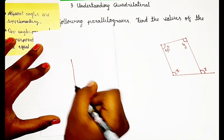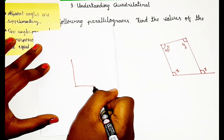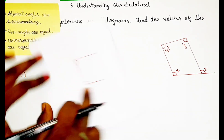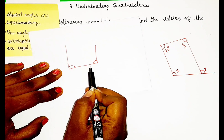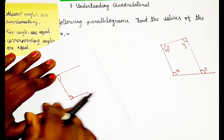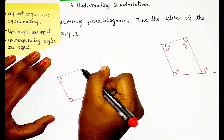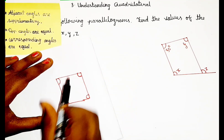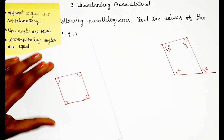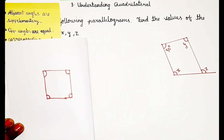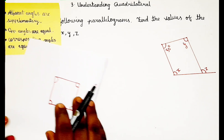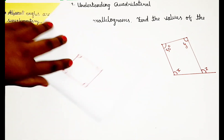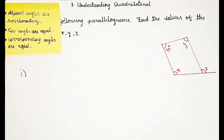If you guys don't know adjacent angles, let me explain. Here there is a line, and there are two angles meeting at a line. If two angles are on the same line, it is an adjacent angle. If I have angles like this on all four sides, all four are adjacent angles — connecting each other, lying on the same line.